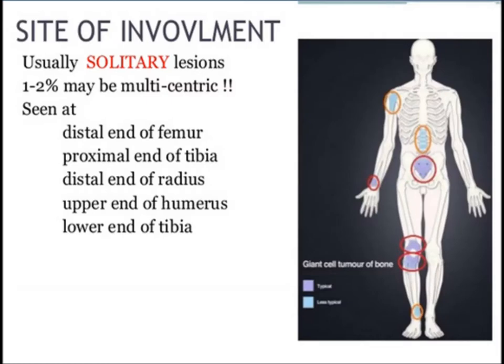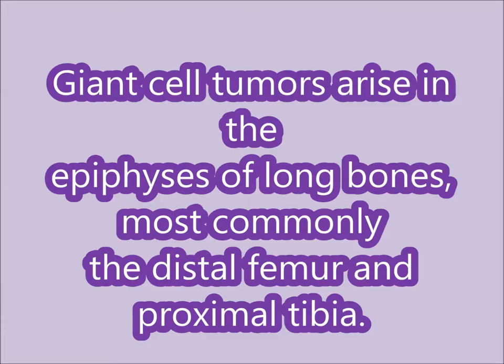Site of involvement: usually solitary lesions; 1–2% may be multicentric. Seen at the distal end of femur, proximal end of tibia, distal end of radius, and upper end of humerus. Most commonly involved are the lower end of femur and proximal tibia.